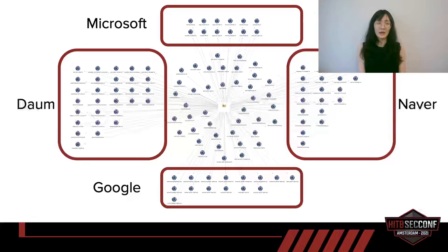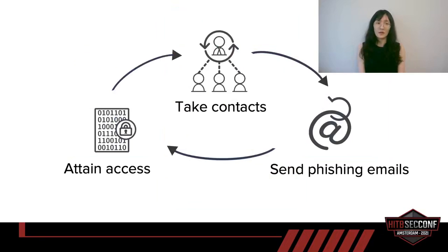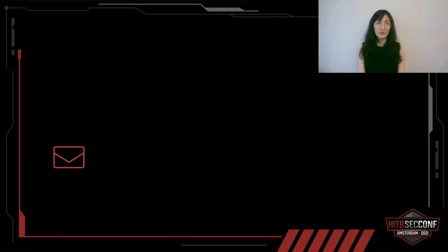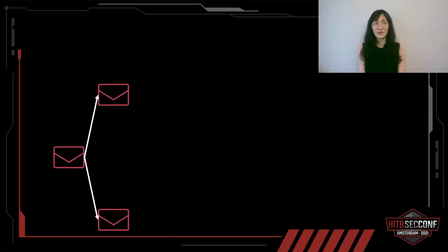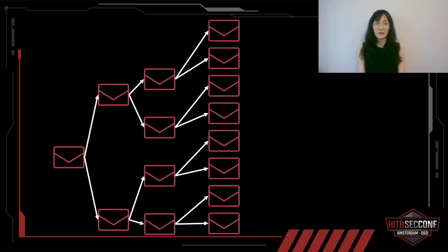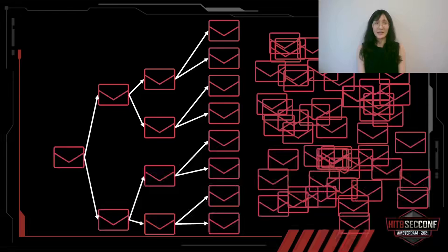So how do they actually attack victims? First, they will obtain account access. Then they will retrieve the contacts in those accounts and send phishing emails to those contacts. Since they send phishing emails, that could in turn grant them access to even more accounts. In other words, if one account can bring two more email accounts, the impact multiplies. At the very end, it will result in thousands of email accounts being compromised.